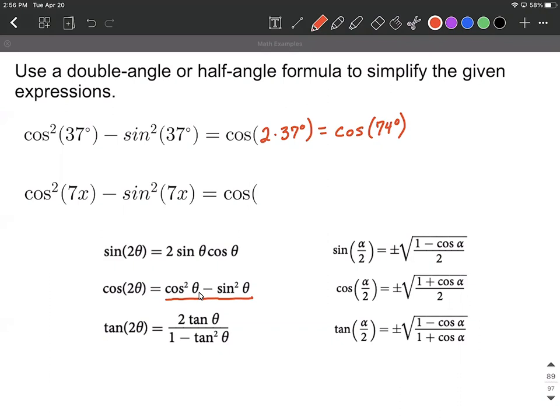On this one we're going to get two multiplied by 7x, which reduces down to cosine of 14x.